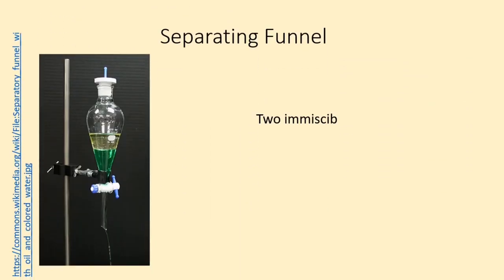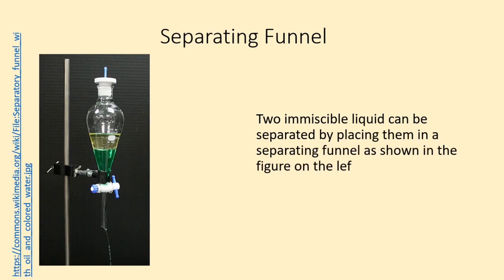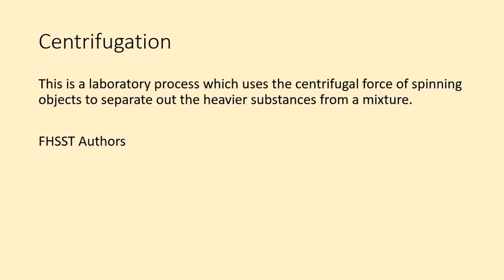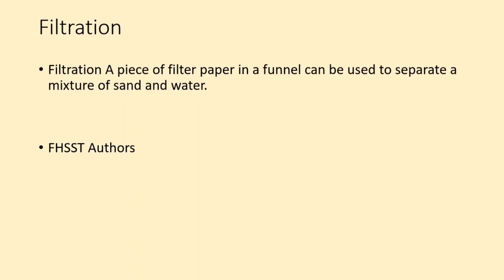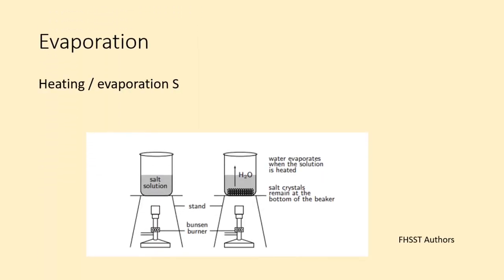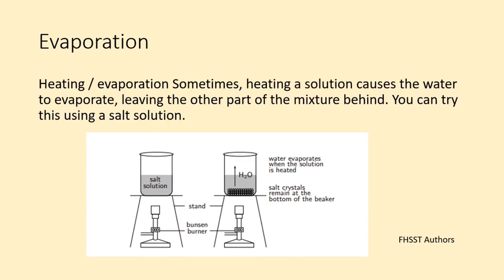Separating funnel: Two immiscible liquids can be separated by placing them in a separating funnel as shown in the figure on the left. Centrifugation: This is a laboratory process which uses the centrifugal force of spinning objects to separate out the heavier substances from a mixture. Filtration: A piece of filter paper in a funnel can be used to separate a mixture of sand and water. Heating evaporation: Sometimes heating a solution causes the water to evaporate, leaving the other part of the mixture behind. You can try this using a salt solution.